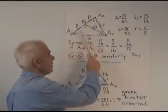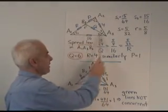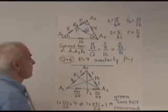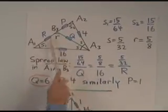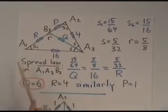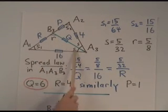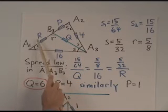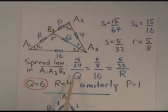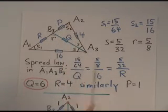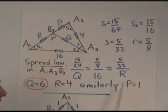So now, putting things together, we found that in this triangle, we have little s is 5 over 32, and this spread R is 5 over 8. So the spread law in this triangle, A1, A3, B3, is the spread divided by Q equals 5/8 over 16 equals 5/32 over R. We'll call this one R. That allows us to solve for Q. Q is 6. And it will also allow us to solve for R. R is 4. And similarly, if you look at the spread law in this triangle, then you can determine also that P is equal to 1.